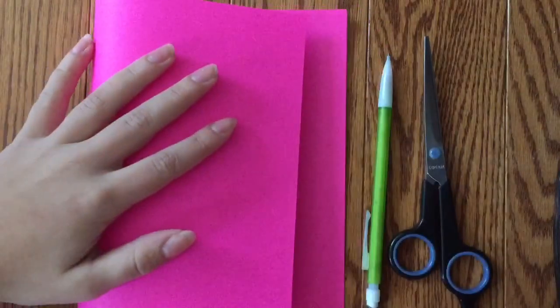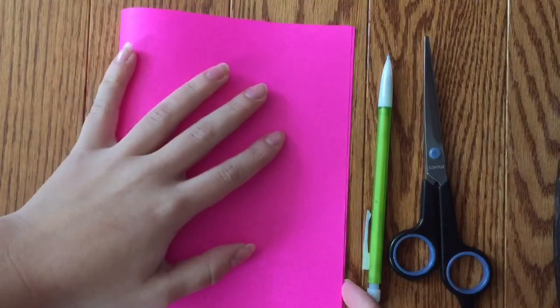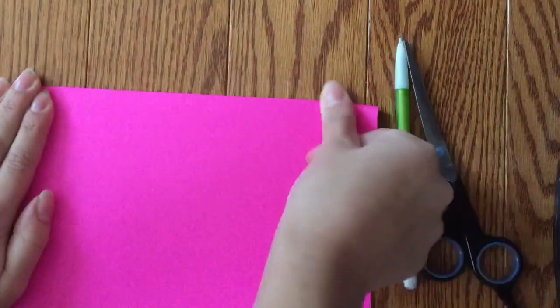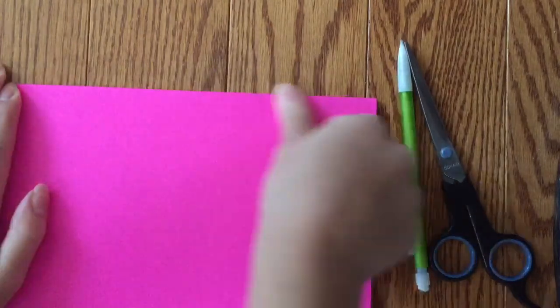So to get started, we're going to take our pink piece of paper and we're going to fold it in half like so. Make sure that the edges are firmly pressed together.